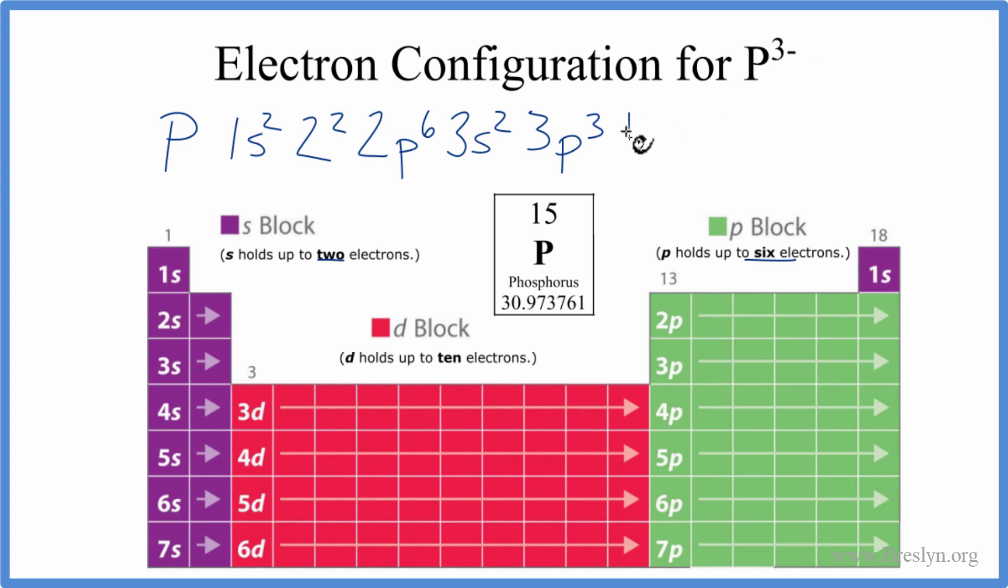So we're going to add three electrons here, which will give us 3p6. And this is the electron configuration for P3 minus, the phosphide ion. We should also put our 3 minus up here.